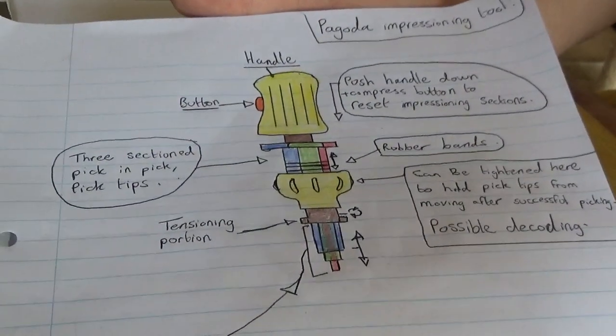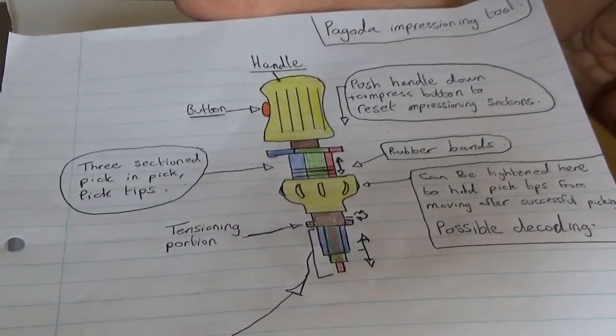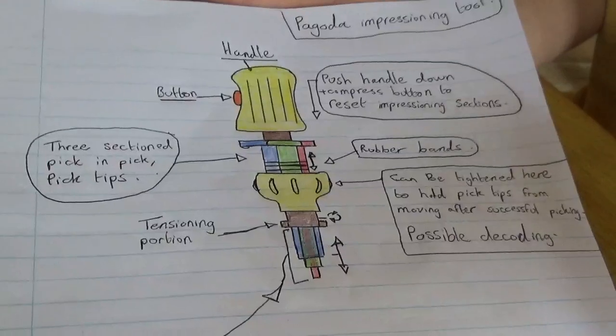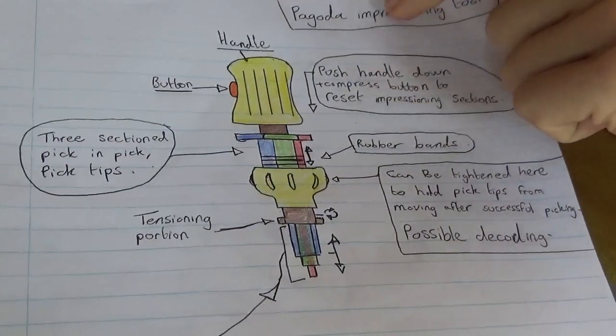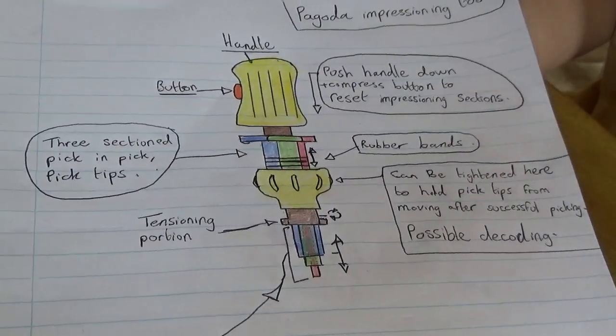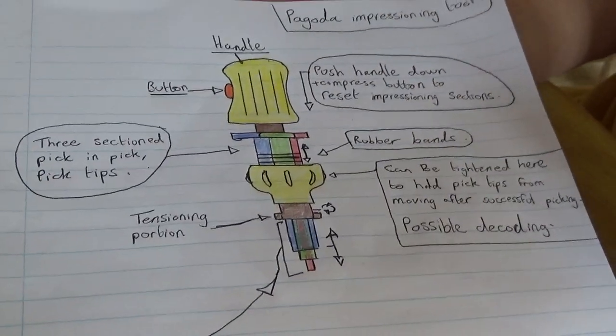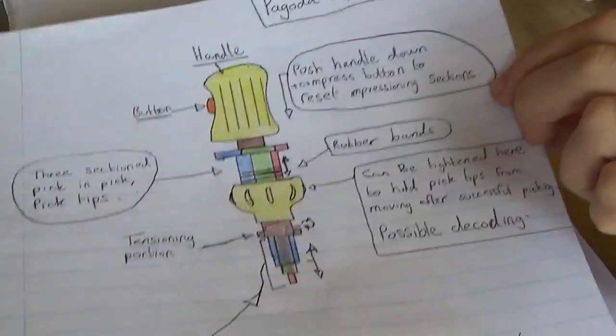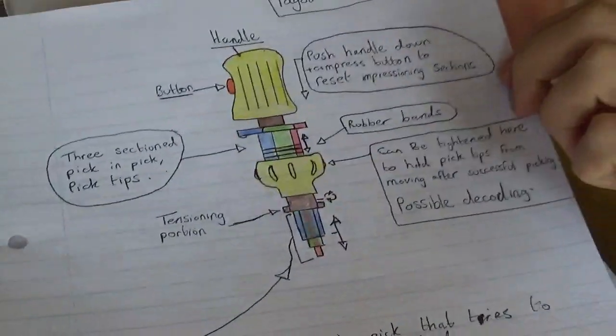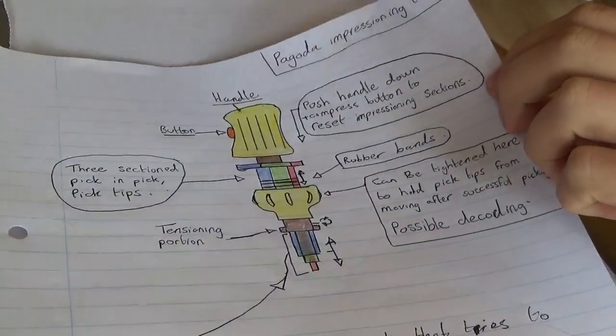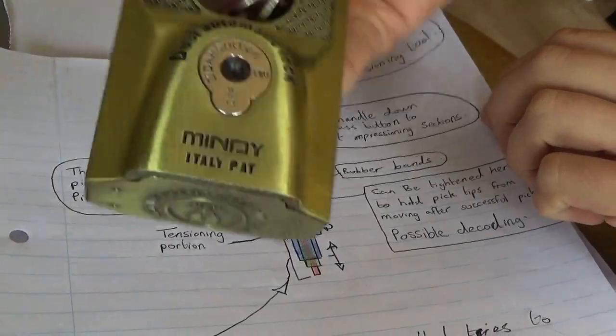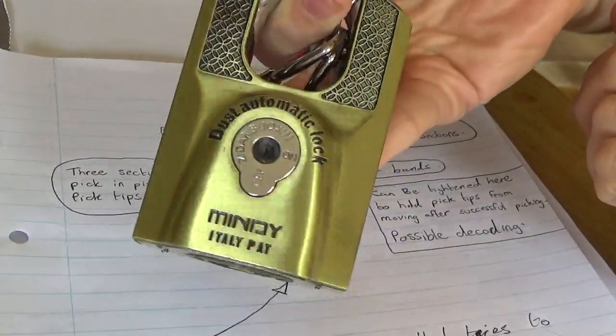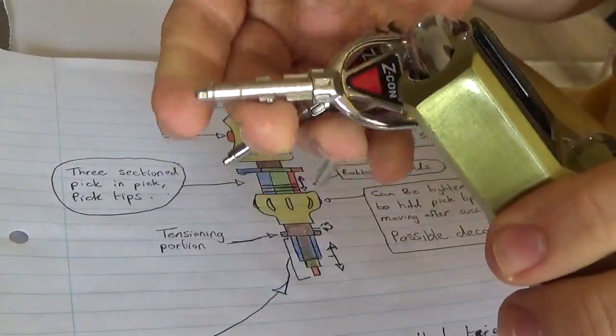This one is the pagoda impressioning tool idea that we have, and we have the tool here. Just so you know, this is meant to impression open locks that look like this, basically the ones that have the keys that would look something like this.